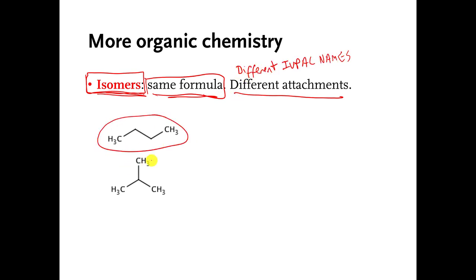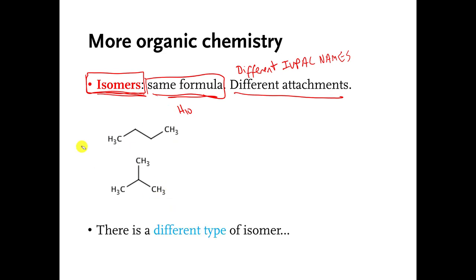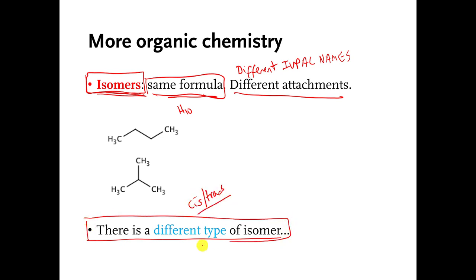This is butane. This is called 2-methylpropane. They have the same formula — they are both C4H10 — but they are not the same molecule, so they are isomers of each other. There is a different kind of isomer. We also talked about cis and trans isomers in a previous video. Believe it or not, there is an even different kind of isomer, and this one is really weird.